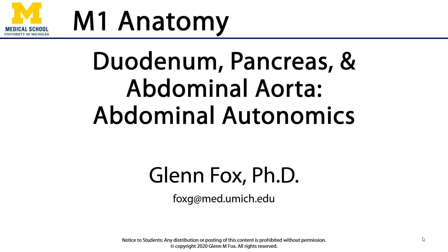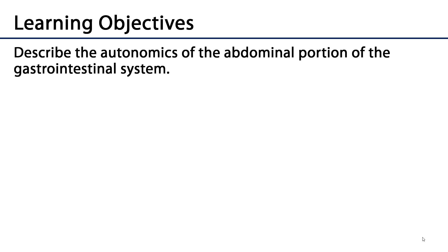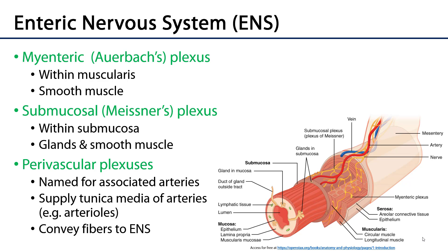Let's talk about abdominal autonomics. In this video, we'll talk about the autonomics of the abdominal portion of the gastrointestinal system. The GI tube is served by the enteric nervous system, or the ENS, which is sometimes described as a part of the autonomic nervous system, but the enteric nervous system may also function independently from the autonomic nervous system.